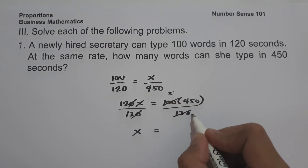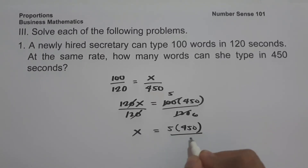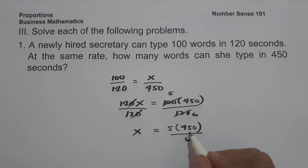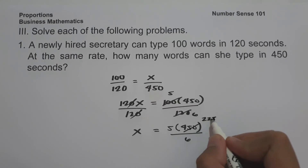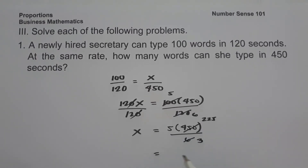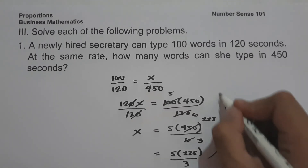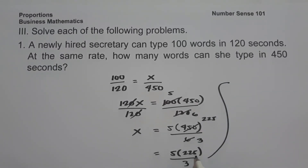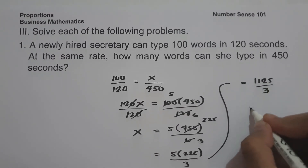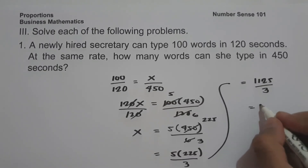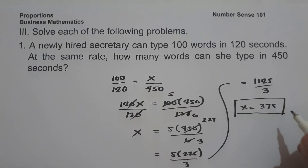We have 5 times 450 over 6. Since 450 and 6 are divisible by 2, 450 becomes 225 and 6 becomes 3. So x equals 5 times 225 over 3, which is 1,125 over 3, giving us 375. Therefore, the secretary can type 375 words in 450 seconds.